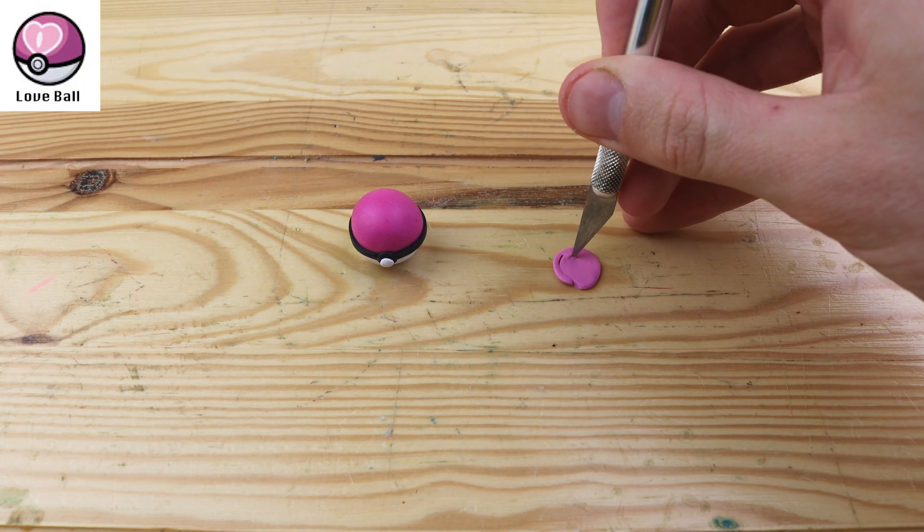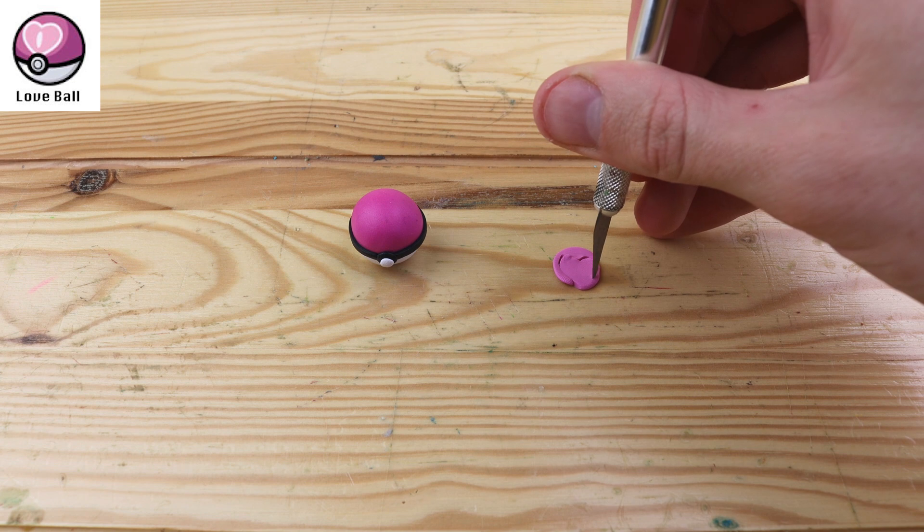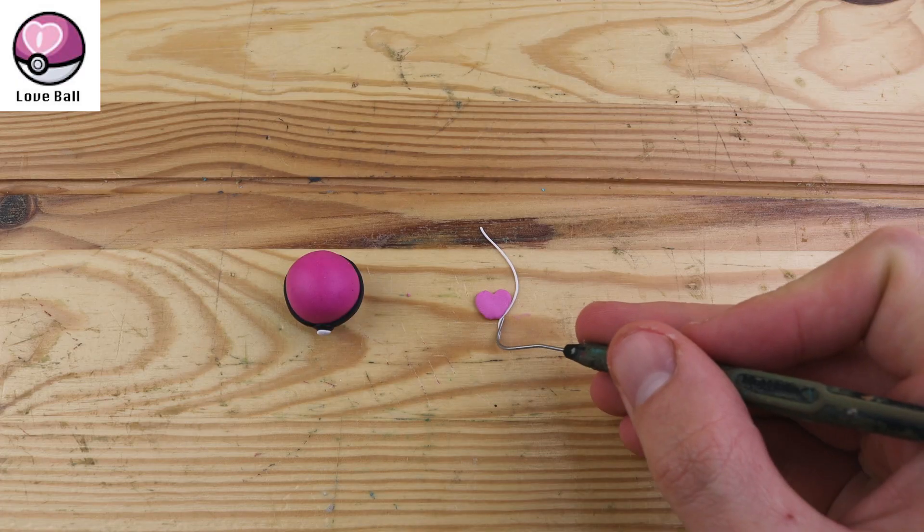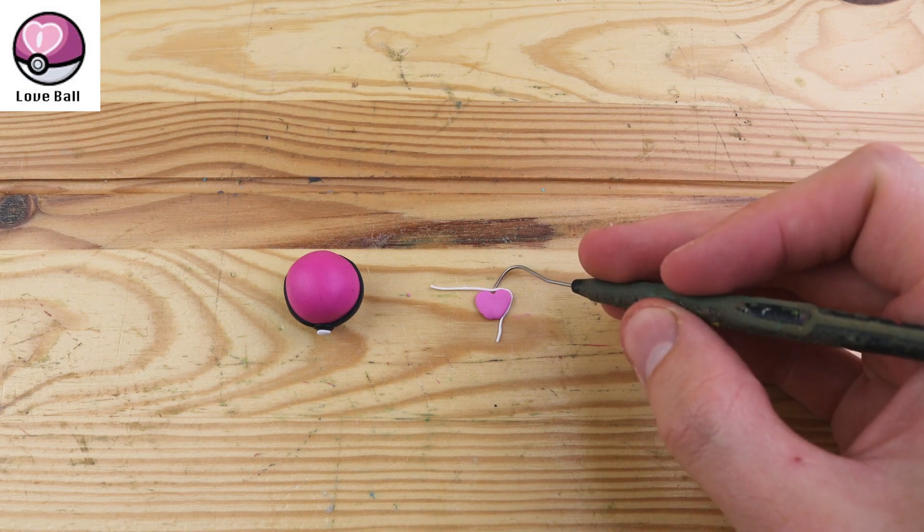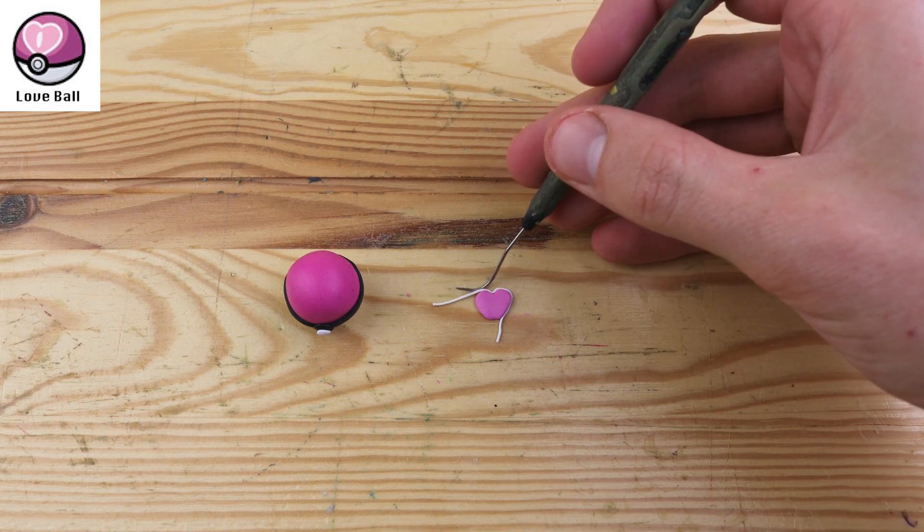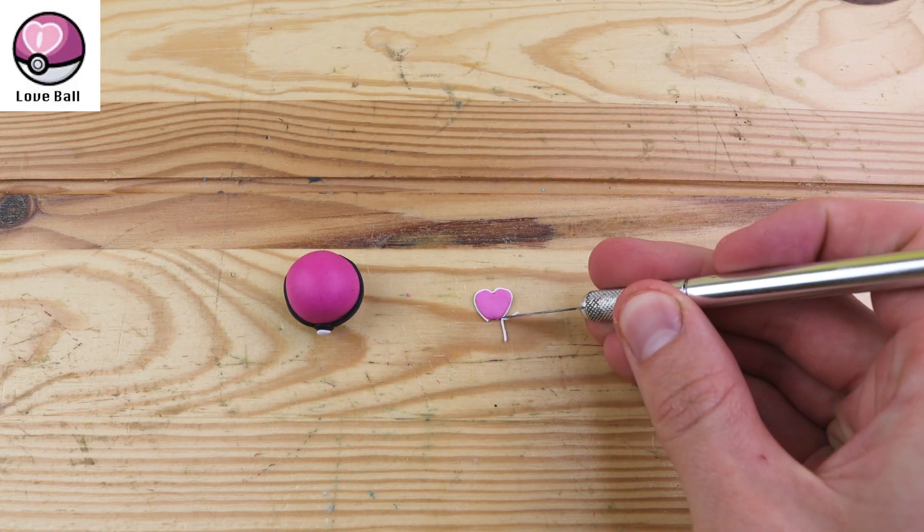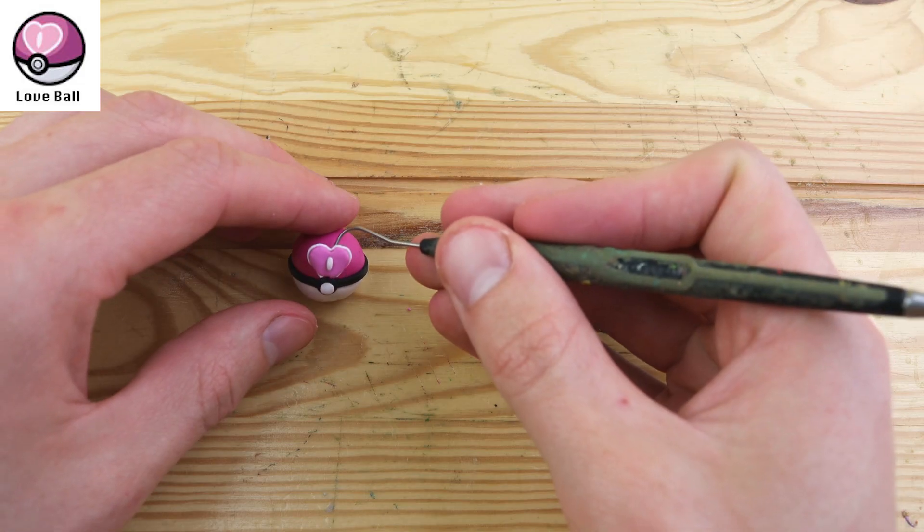This is the love ball. This Pokéball is more likely to succeed against Pokémon of the opposite gender to the one that you're currently using. We need to create this heart on the front. We have a white outline going around it. And let's place this little dash in the middle, and put it on the Pokéball.